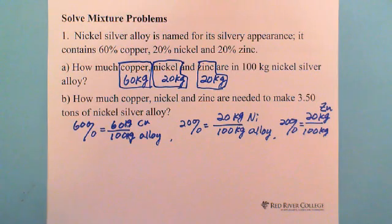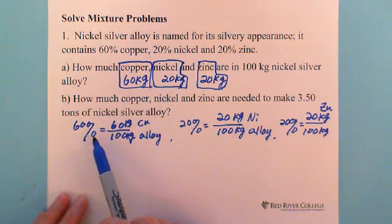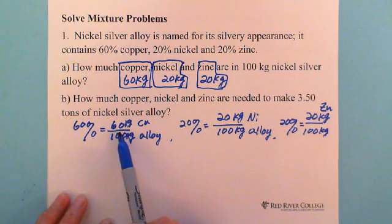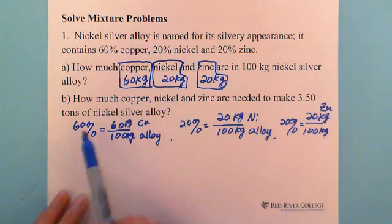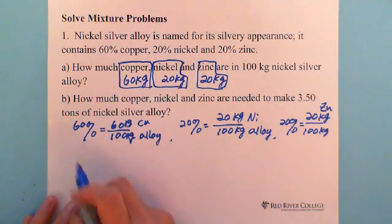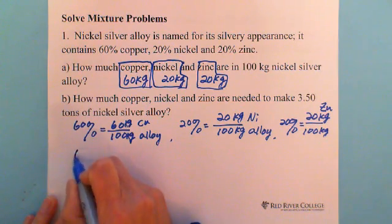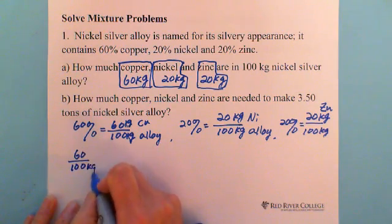Question B: how much copper, nickel, and zinc are needed to make 3.50 tons of nickel silver alloy? From Question A we understand that in 100 kg of alloy there are 60 kg of copper. Now we have 3.50 tons, so we set up a ratio proportion: 60 over 100 kg.